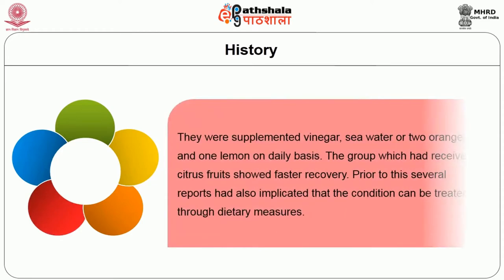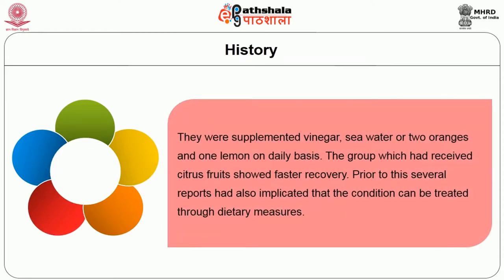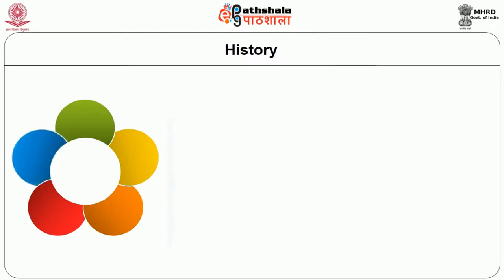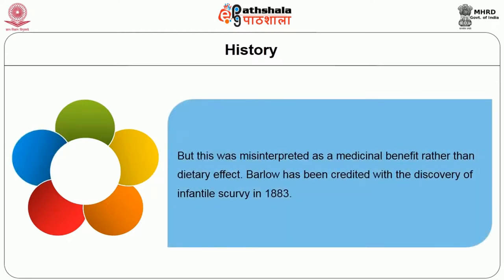The seamen were supplemented with vinegar, seawater, or two oranges and one lemon on a daily basis. The group which received citrus fruits showed faster recovery. Prior to this, several reports had also implicated that the condition could be treated through dietary measures, but this was misinterpreted as a medicinal benefit rather than a dietary effect. Barlow has been credited with the discovery of infantile scurvy in 1883.